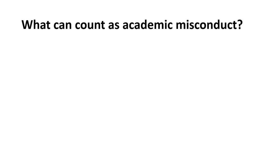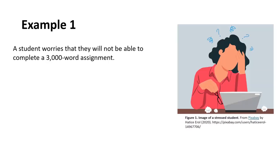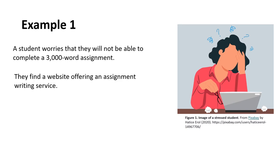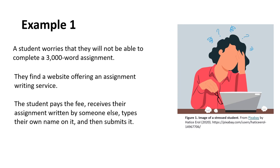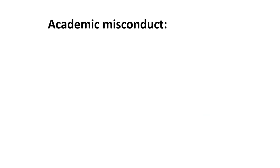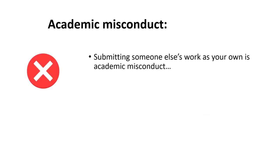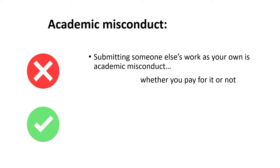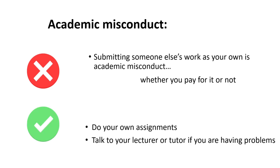Here are some examples of what can count as academic misconduct. Example one: a student worries that they will not be able to complete a 3,000 word assignment. They find a website offering an assignment writing service. The student pays a fee, receives their assignment written by someone else, types their own name on it and then submits it. This is academic misconduct. Submitting someone else's work as your own is academic misconduct whether you pay for it or not. You must do your own assignments and talk to your lecturer or tutor if you're having difficulties.